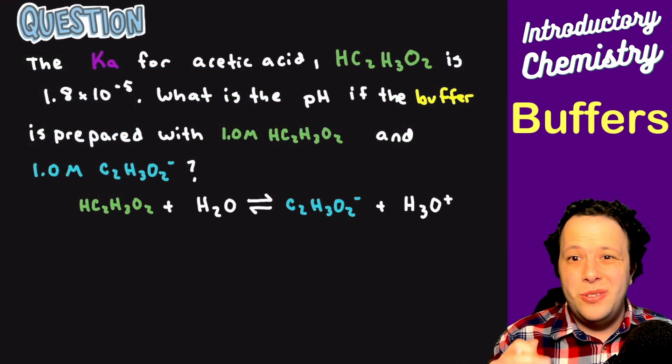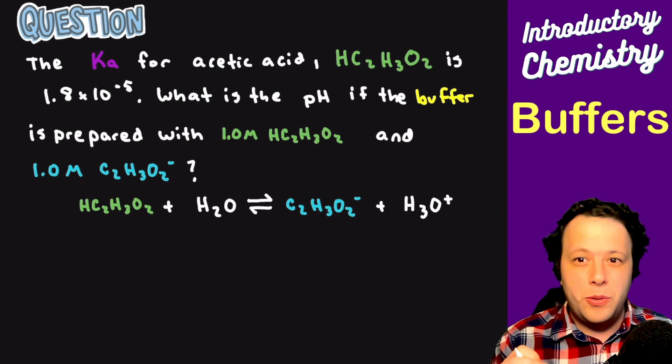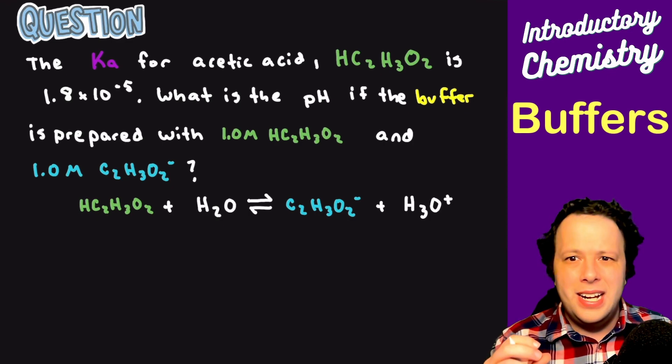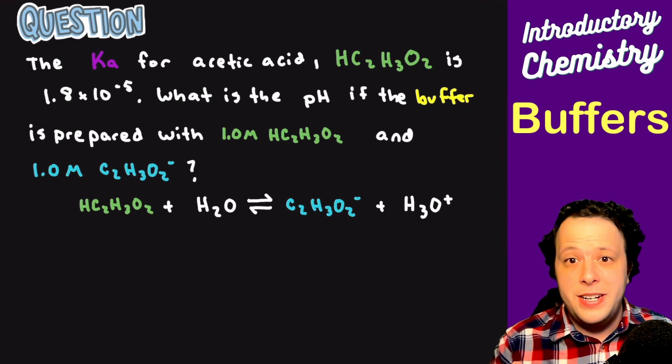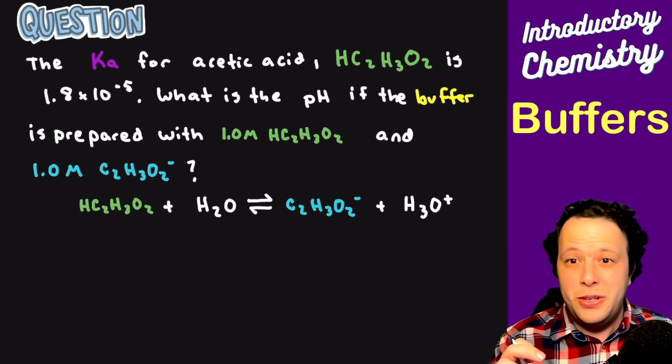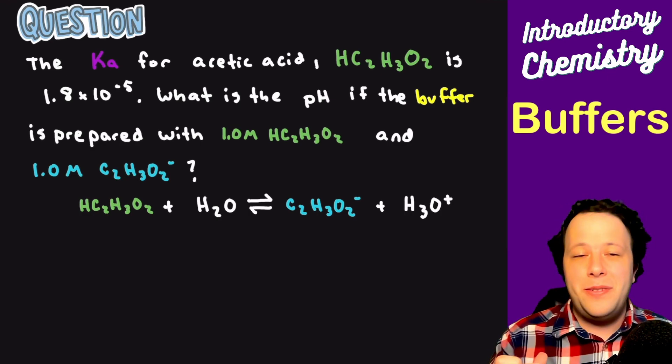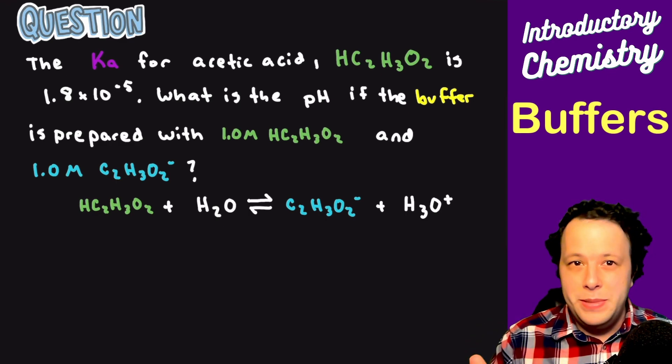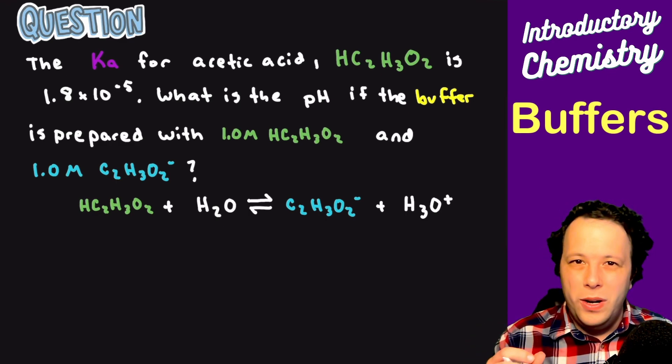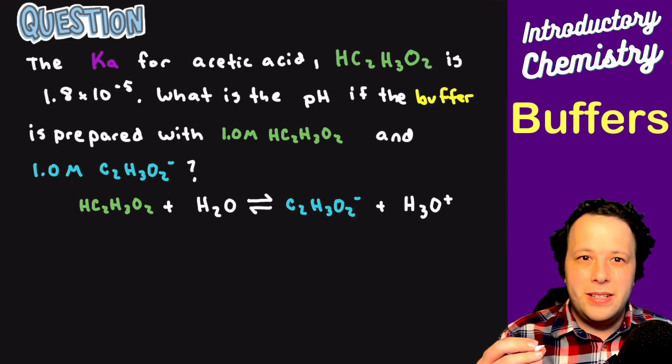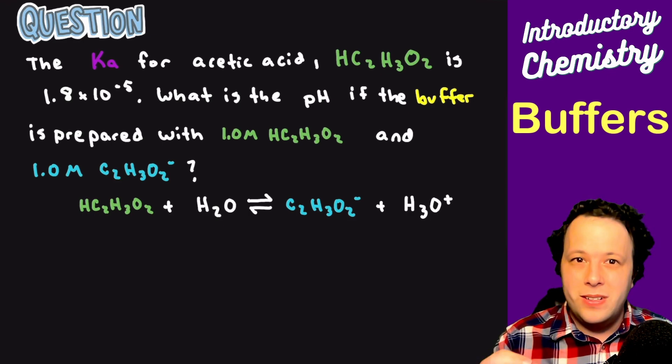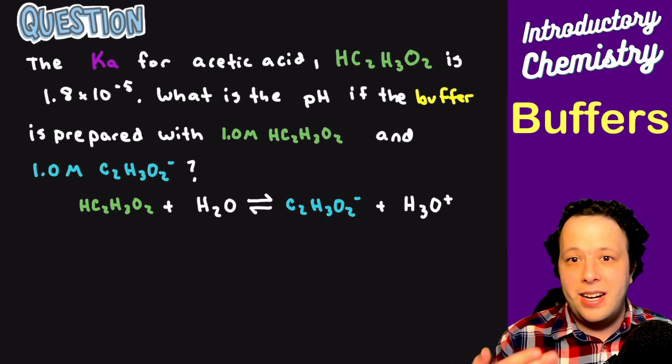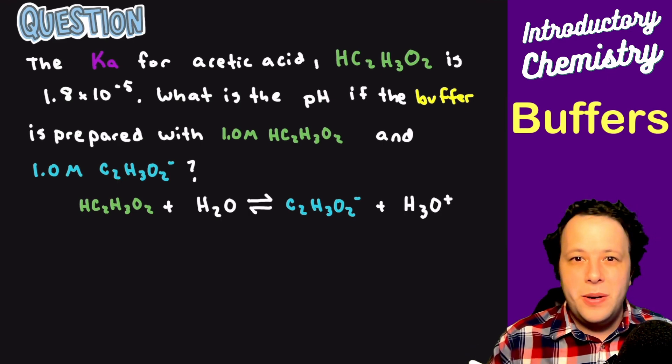When it comes to actually trying to analyze where does your buffer work, this is all about understanding what is the Ka value and actually deriving an equation that can be used to determine how well does your buffer work. If I had the following: the Ka for acetic acid is 1.8 times 10 to the negative 5. What is the pH of the buffer that is prepared with 1 molar acetic acid and 1 molar of acetate ion, which is the conjugate base?